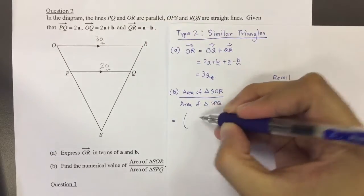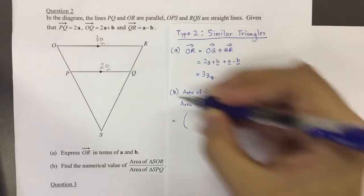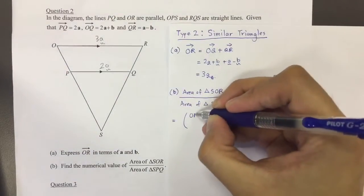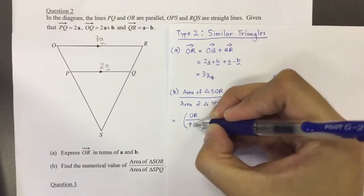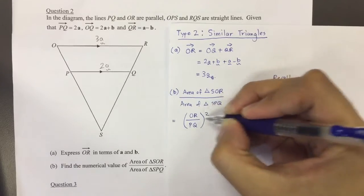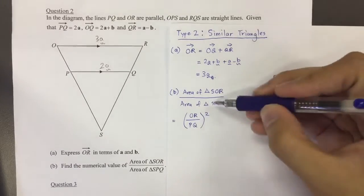So I'm going to make use of the two lengths of, actually, OR. Not the vector OR, but just the side OR. And the side of PQ, because these are the two corresponding sides to these two triangles.